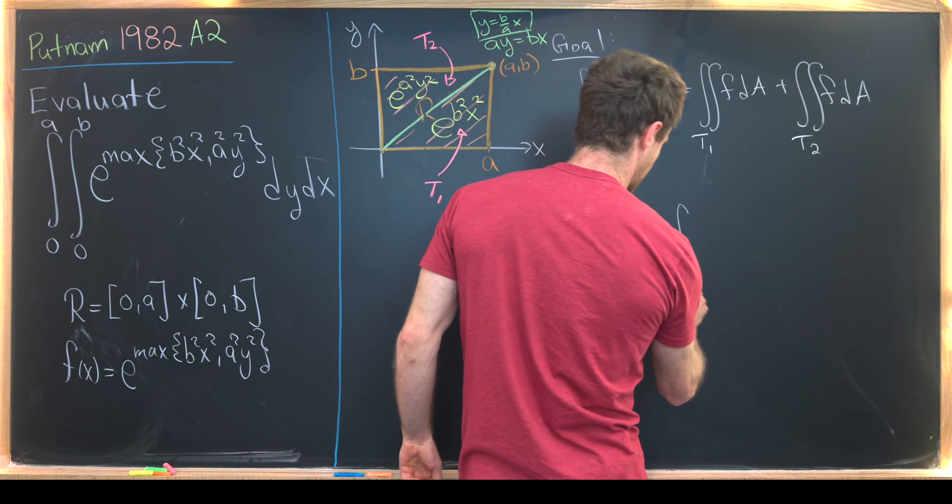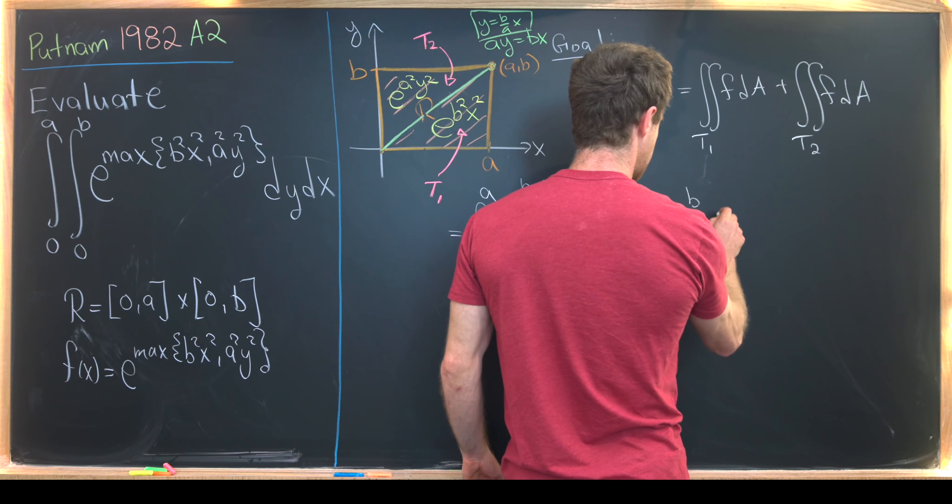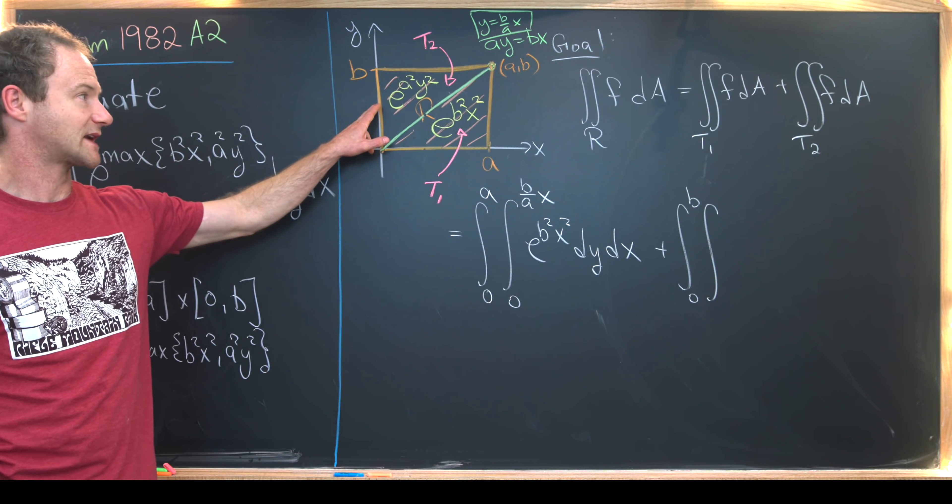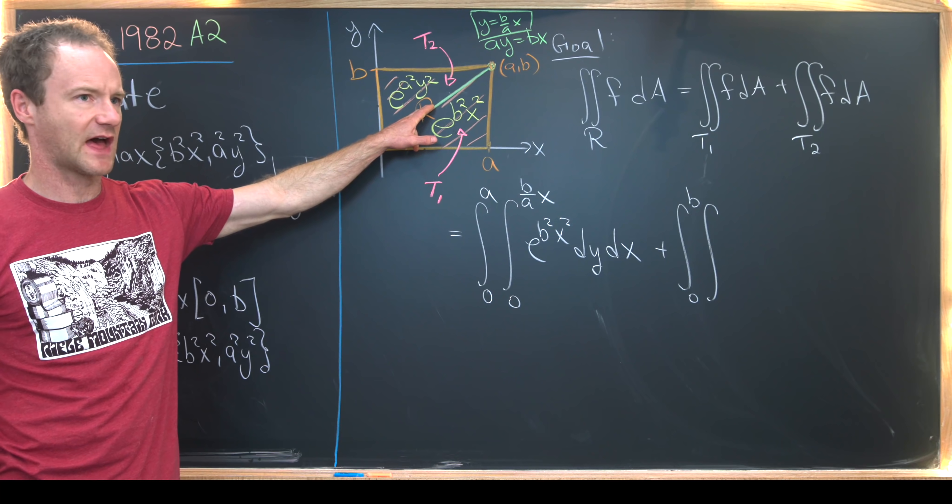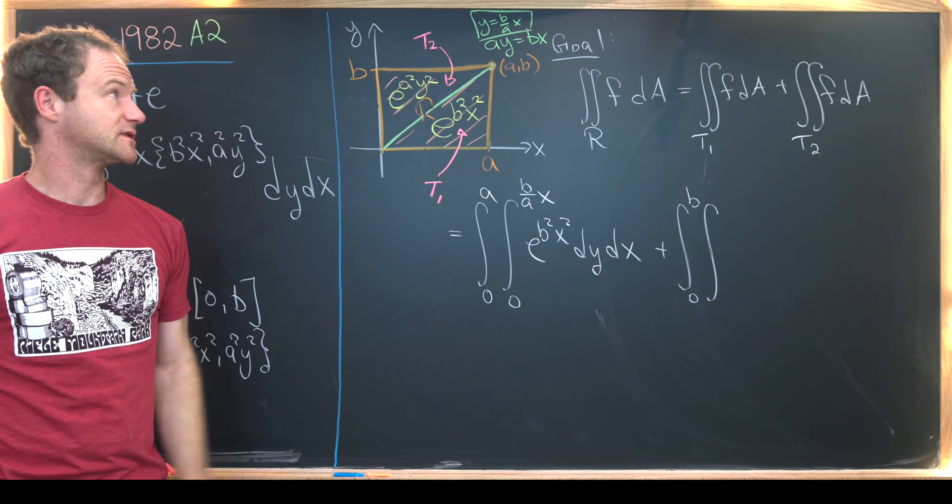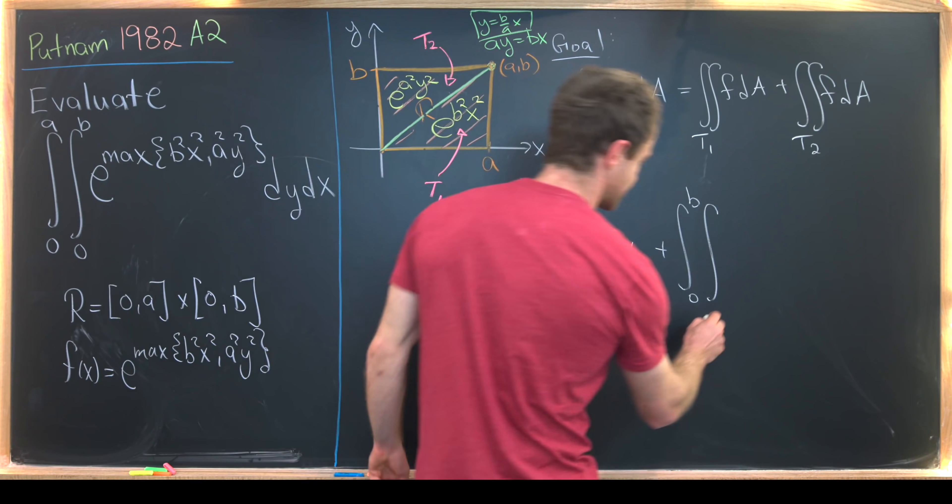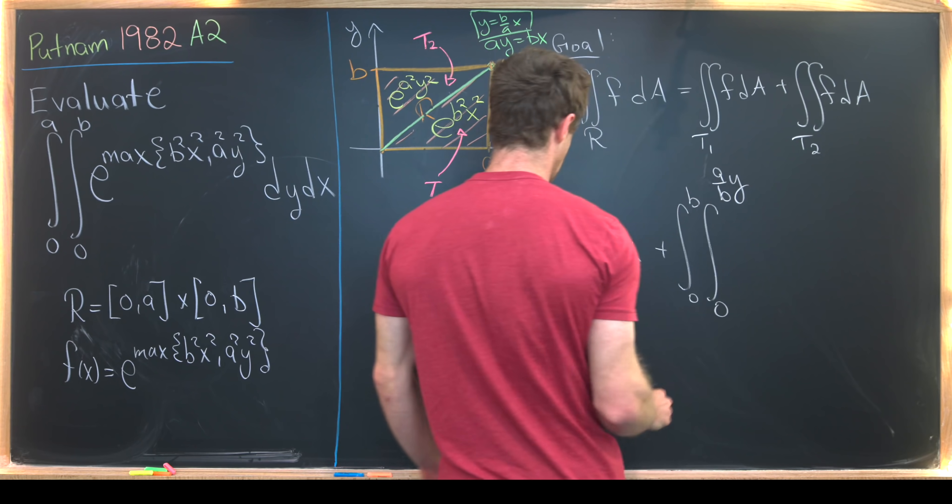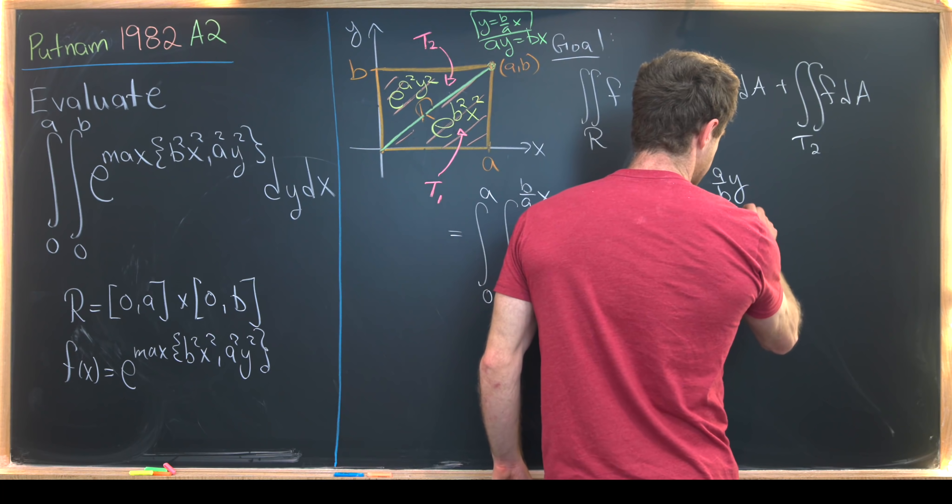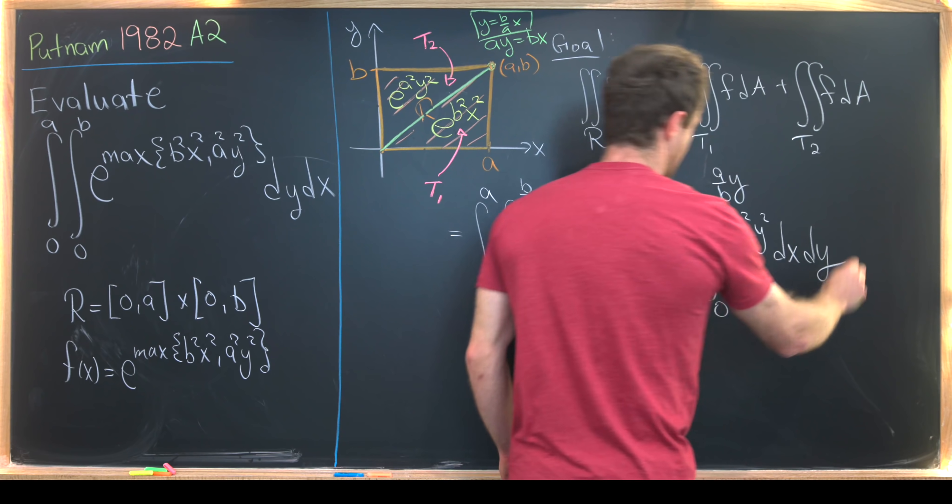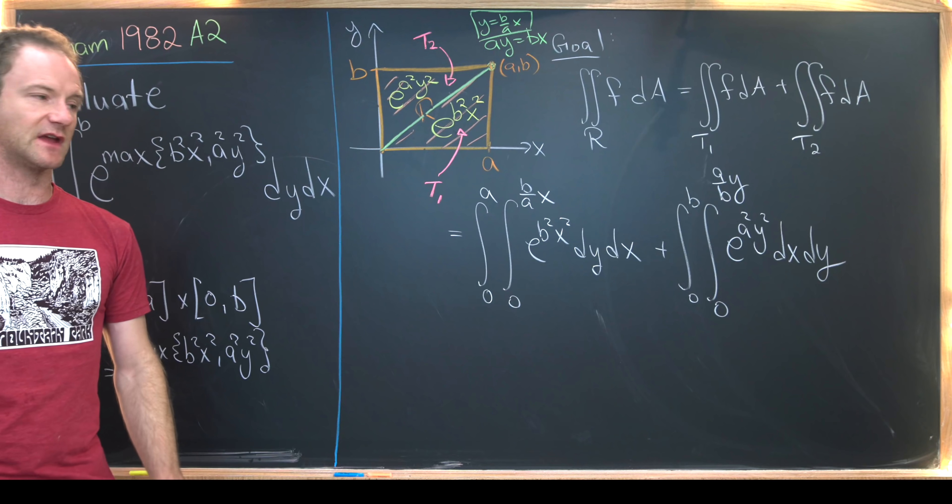Now let's see what we have for the other one. So this is going to be the integral from zero to b. And then the integral from the y axis out to this same line, but we need to solve that in terms of y. So that would be x equals a over b times y. So this is going to go from zero to a over b times y. Now we have e to the a squared y squared dx dy. So our integration is happening in the other order.